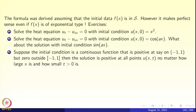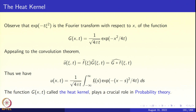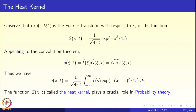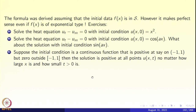Suppose the initial condition is a continuous function which is positive on the interval (−1,1) and zero outside the closed interval [−1,1]. The exponential factor in the integral is obviously positive and the datum is non-negative, so the integrand is non-negative and the integral will be strictly positive. This holds no matter how small t is, because we integrate over the whole space.